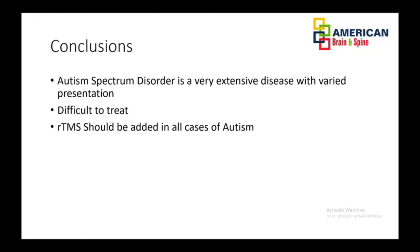Autism Spectrum Disorder is a very extensive disease with varied presentation. It is a difficult disease to treat — you need to be really patient and spend a lot of time with the family explaining the disease and the treatment. I think RTMS should be added to all cases of autism, along with other therapies such as speech therapy, occupational therapy, physiotherapy, behavioral therapy, and cognitive therapy. TMS is a very, very useful addition for these patients, and the results are extremely encouraging. We need to promote it and use it in almost all cases of autism.